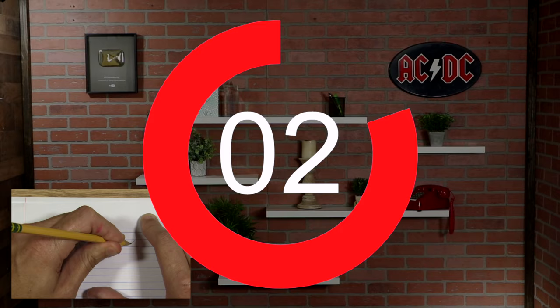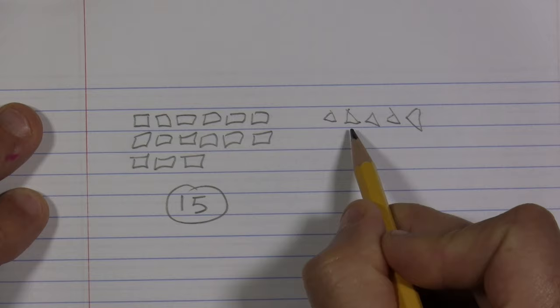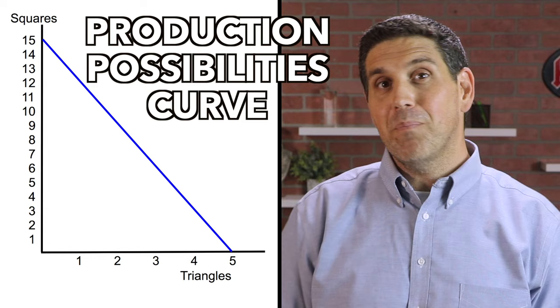All right, now let's see if you actually beat me. I got 15 squares and only five triangles, and some of those triangles are really rough. These numbers give you your production possibilities — the amount of squares and triangles you can produce in 10 seconds. You can use these numbers to draw the very first graph that you learn in an econ class. The production possibilities curve illustrates a lot of the key concepts that you learn in economics.